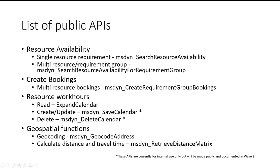Similarly, when we have requirement groups or multi-resource requirements — for example, when a work order needs more than one person to accomplish a job — you would need a requirement group. You could use this API to find the available time slots for groups of resources that could fulfill your job. It could be one or more than one resource for that job to be done.